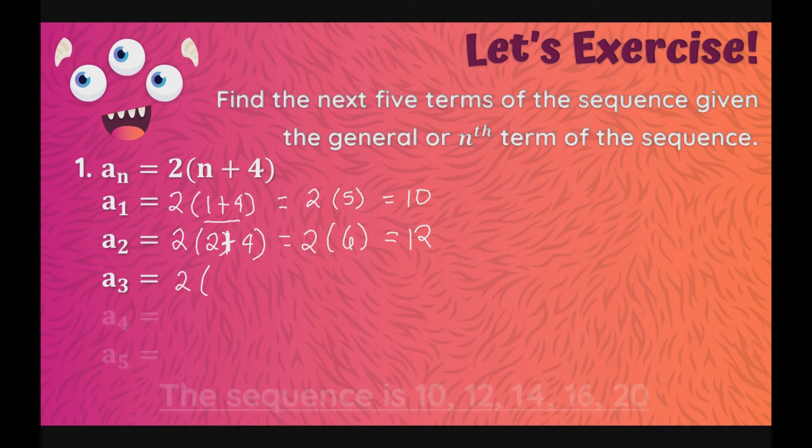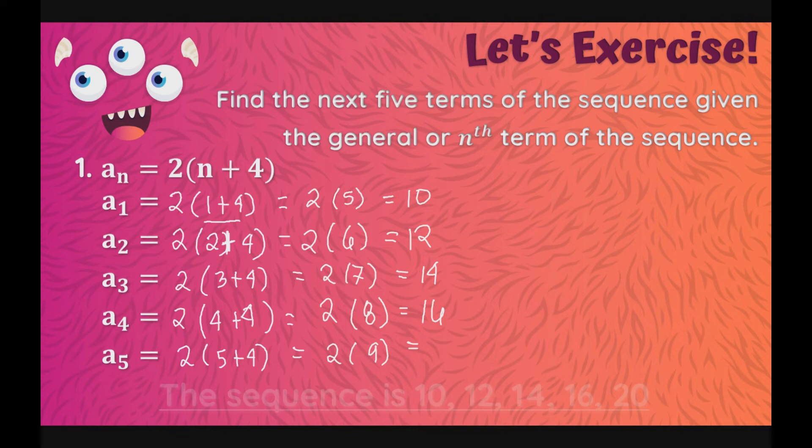Now, for our a sub 3, magiging 2 times parenthesis 3 plus 4, which is equal to 2 times 7, and 2 times 7 is 14. Now, a sub 4, magiging 2 times 4 plus 4, which is equal to 2 times 8, which is 16. Now, our fifth term will be 2 times 5 plus 4, which is equal to 2 times 9, and the final answer will be 18.